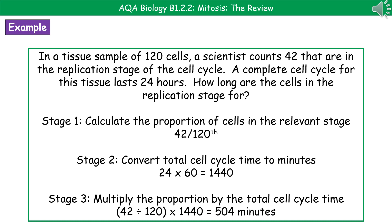There are three steps to this calculation. First, calculate the proportion of cells in the relevant stage: 42 out of 120, giving 42/120. Second, convert the total cell cycle time into minutes: 24 hours × 60 = 1440 minutes. Third, multiply the proportion by the total cell time: 42/120 × 1440 = 504 minutes. So the cells are in the replication stage for 504 minutes.